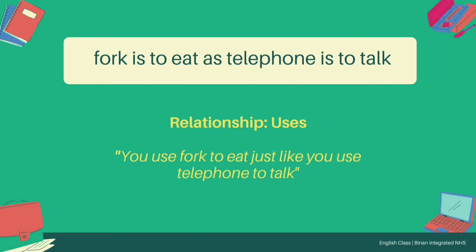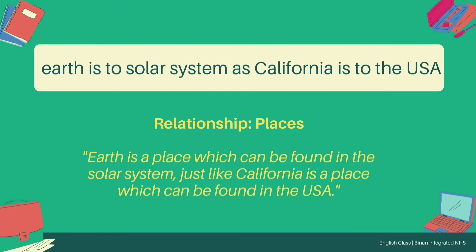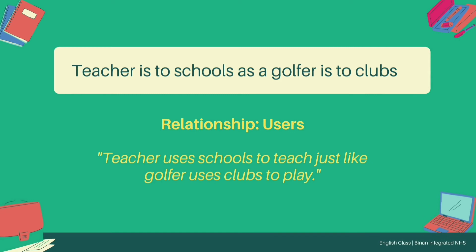Fork is to Eat as Telephone is to Talk. Relationship: uses. You use a Fork to Eat, just like you use a Telephone to Talk. Earth is to Solar System as California is to the USA. Relationship: places. Earth is a place found in the Solar System, just like California is a place found in the USA. Teacher is to Schools as Golfer is to Clubs. Relationship: users. A Teacher uses Schools to teach, just like a Golfer uses Clubs to play.